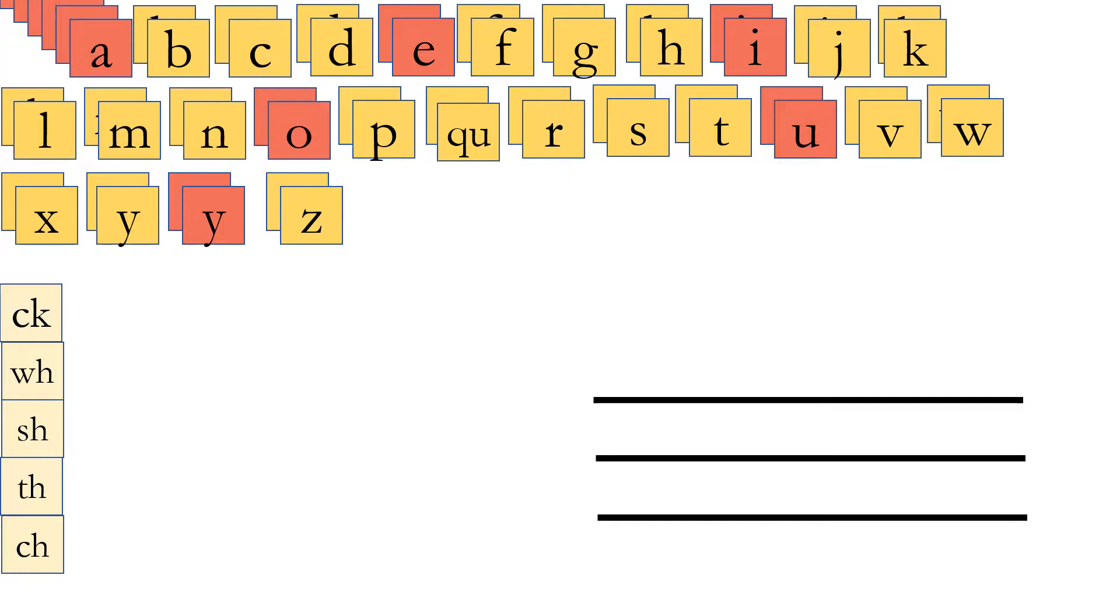Right, because they're vowels, which means that the other ones are consonants. And the five tiles on the left are called digraphs. Di means two, graph means writing, so there are two letters that make just one sound.